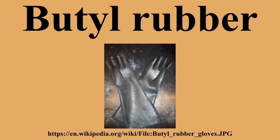Polyisobutylene was discovered by Michael Faraday in 1825. It was first developed by the BASF unit of IG Farben in 1931 using a boron trifluoride catalyst at low temperatures, and sold under the trade name Panol. PIB remains a core business for BASF to this day. It was later developed into butyl rubber in 1937 by researchers William J. Sparks and Robert M. Thomas at Standard Oil of New Jersey's Linden, N.J. laboratory.